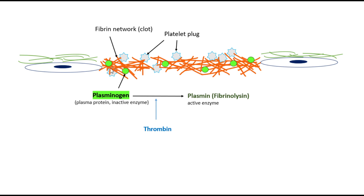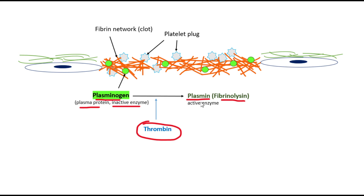While the network of fibrin molecules forms, one of our plasma proteins — an inactive enzyme — gets stuck within the fibrin network. That inactive enzyme is called plasminogen. When the time comes for removal of the blood clot, one of the molecules that can activate plasminogen is thrombin. Thrombin activates plasminogen, and the active form is called plasmin, or fibrinolysin — the molecule that breaks down fibrin so it can be phagocytized and removed from the area.